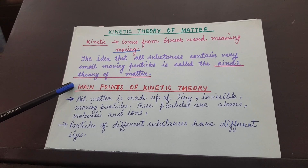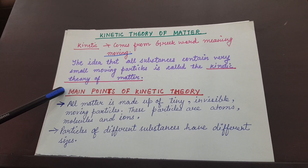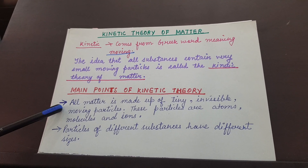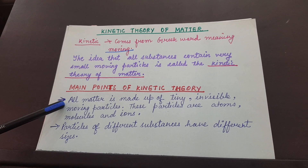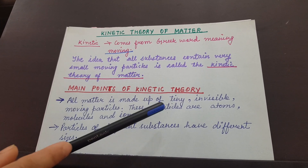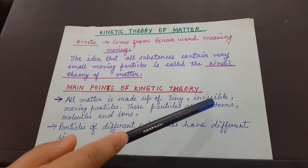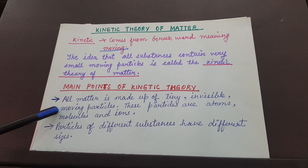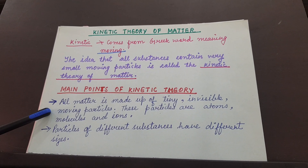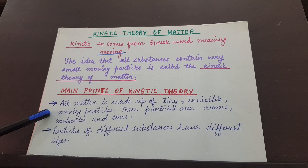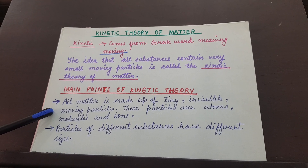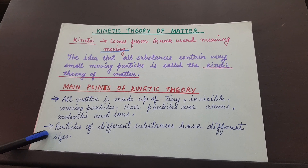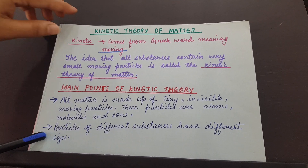Let us know the main points of kinetic theory of matter. First, all matter is made up of tiny — tiny means small — invisible, means that we cannot see with our naked eyes, moving particles, and these particles are atoms, molecules, and ions. Particles of different substances have different sizes.